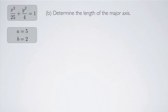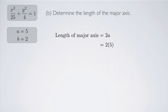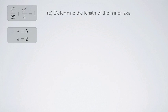Next, the length of the major axis is given by 2a, which is 2 × 5 = 10. Since we always take a to be larger than b, the major axis length is always 2a. The length of the minor axis is 2b, which is 2 × 2 = 4.